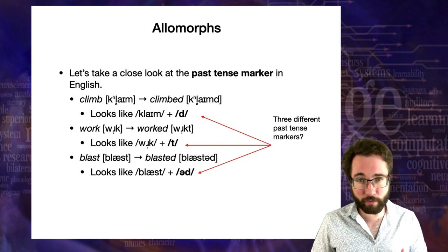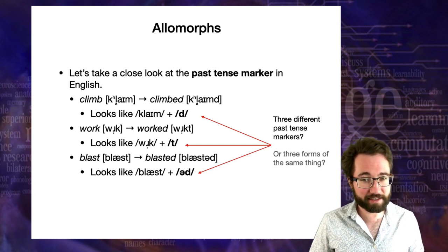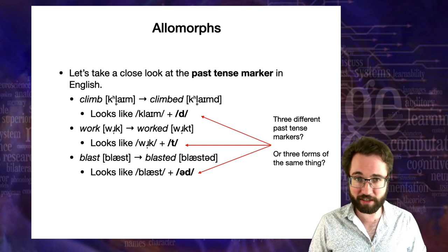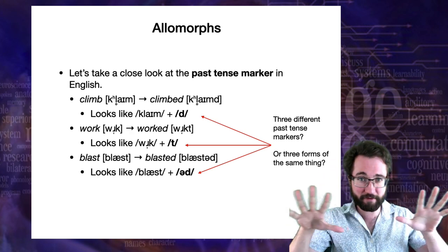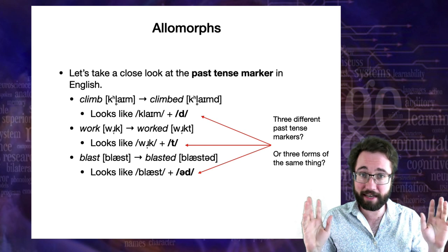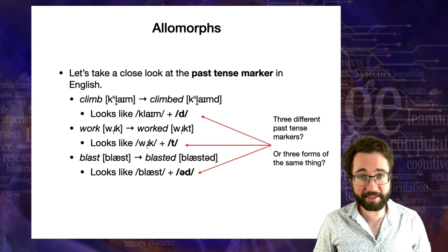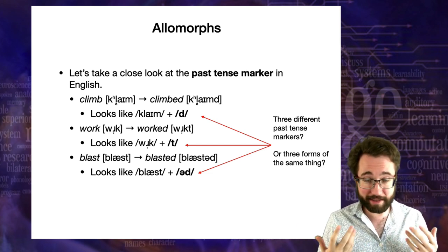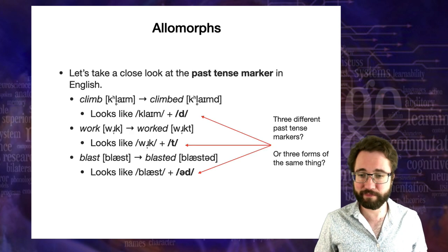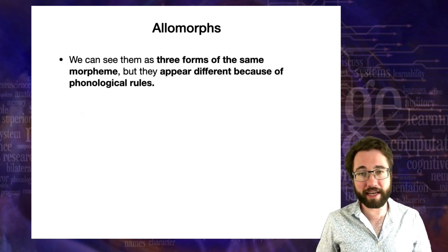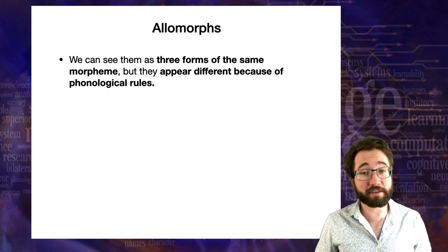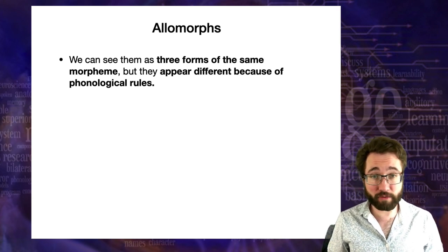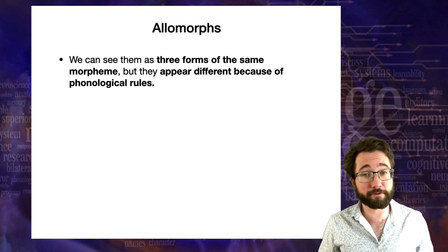Are there really three past tense markers in English, or are these three different forms of the same underlying thing? Remember in phonology, we saw that a single underlying phoneme can be expressed as many different sounds — different allophones. Maybe something analogous is going on here. In fact, phonological rules play the pivotal role. We can see these three forms as three forms of a single underlying morpheme, with differences caused simply by phonological rules.